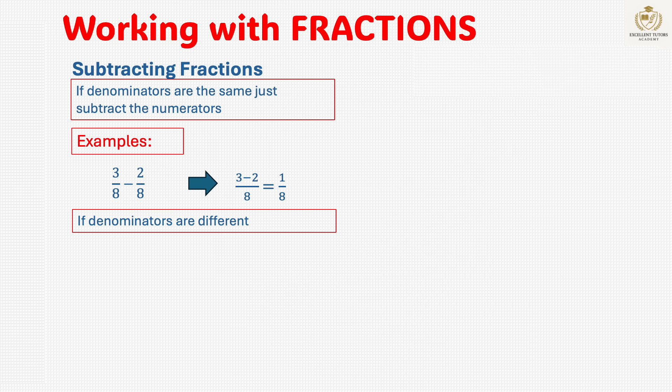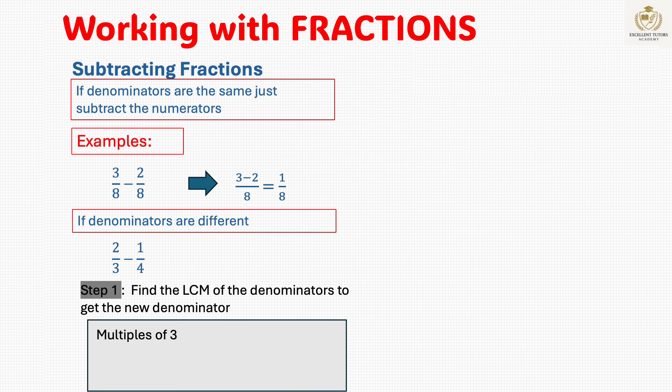If the denominators don't match, follow the same steps for addition. 2 thirds minus 1 fourth. Find the LCM of 3 and 4. The LCM of 3 and 4 is 12.